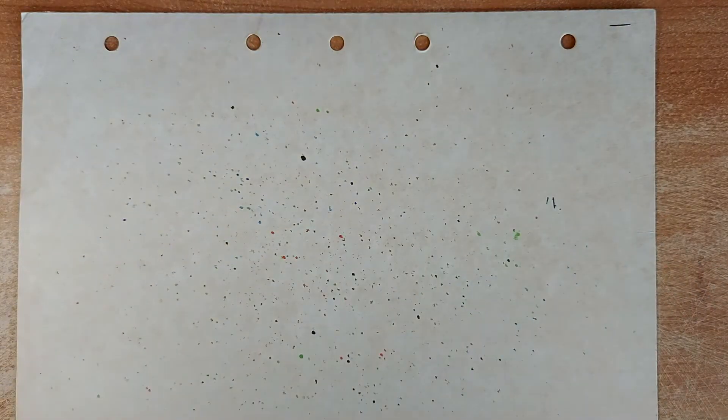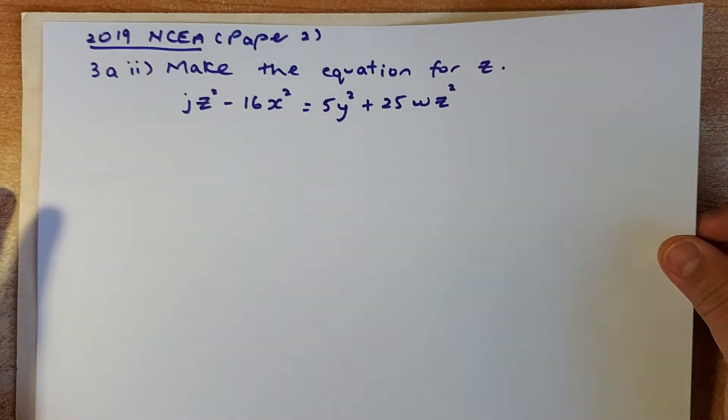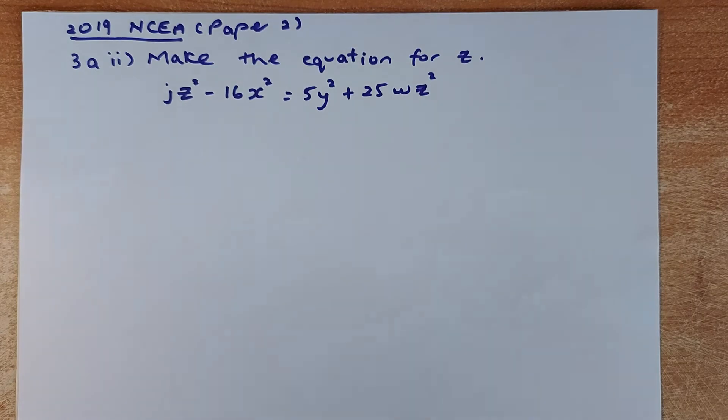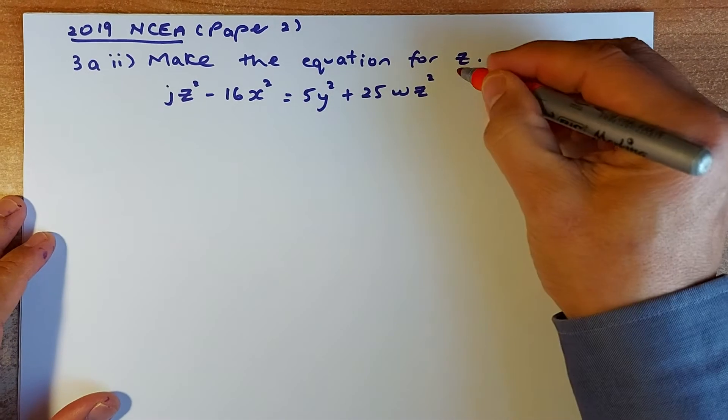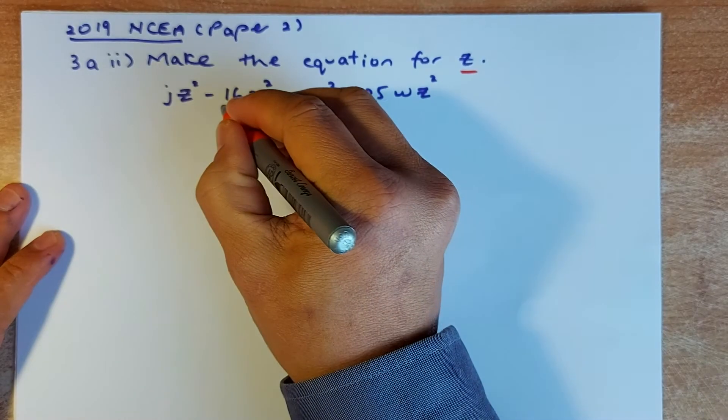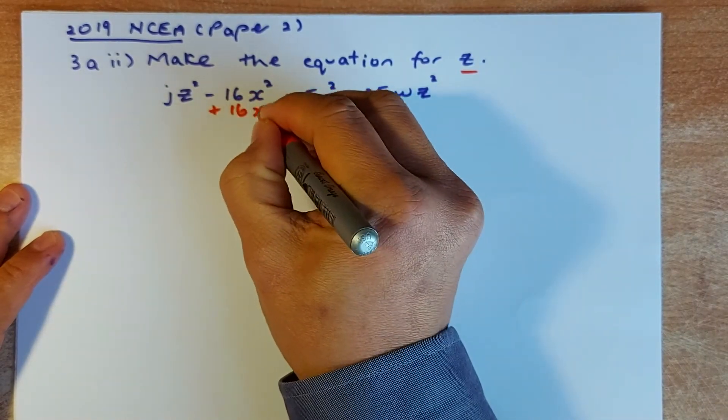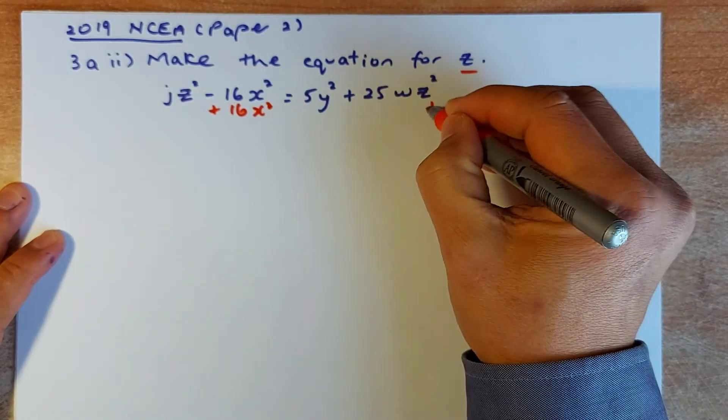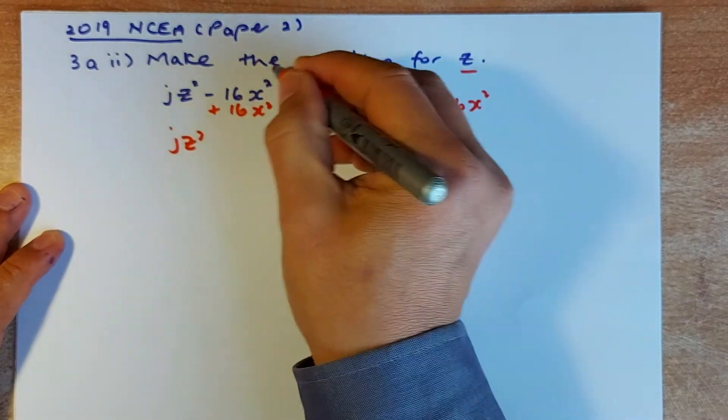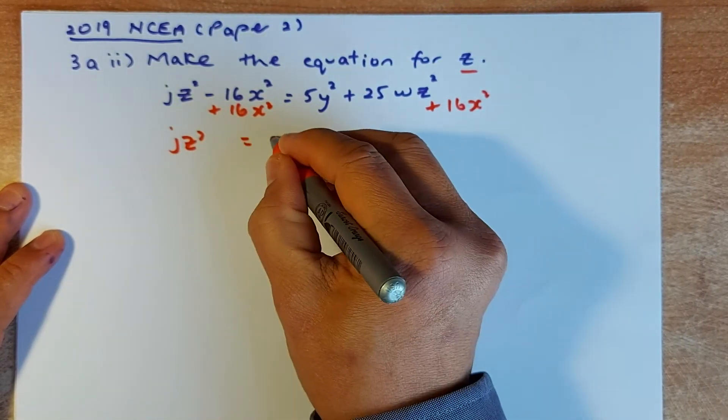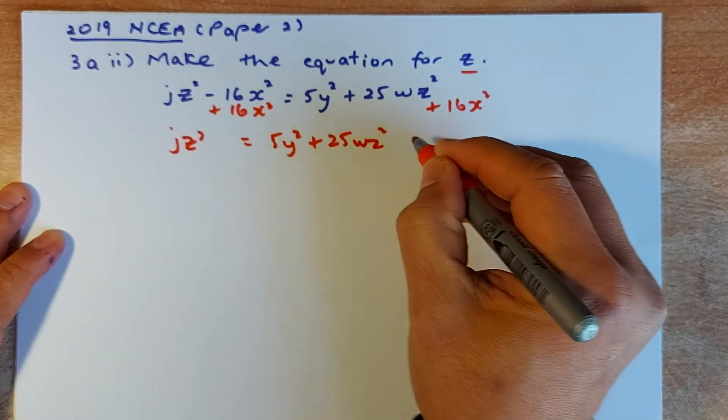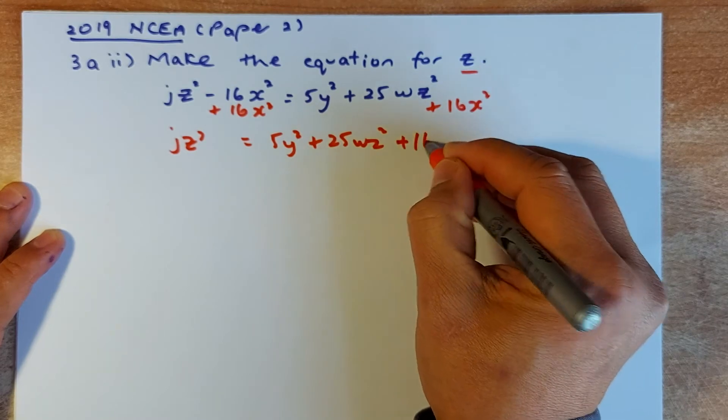Now we're going to do the last one. The last one is from the recent 2019 NCEA paper. So this one is slightly different. You want to make Z. So Z has to be on the left. And the rest has to go on the right. So the first thing you need to get rid of is the -16X². So you plus 16X² on both sides. So the new equation is going to be JZ² equals to 5Y² + 25WZ² + 16X².